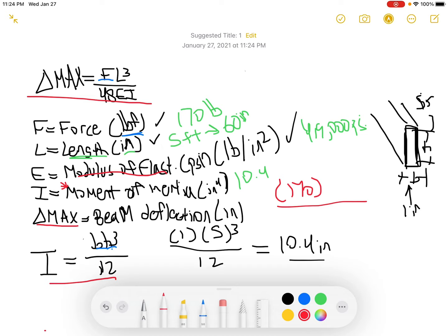Okay, so 170 times 60 to the third power. Oh I forgot the 48, you need 48. So it's 48 times 419k, we'll just say that so we don't have to write it all, and then 10.4.